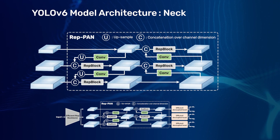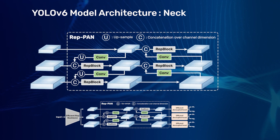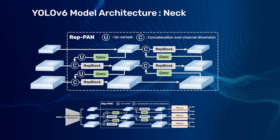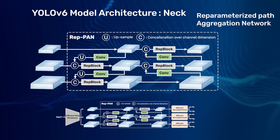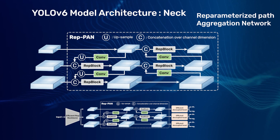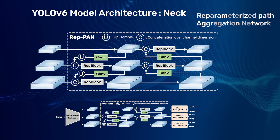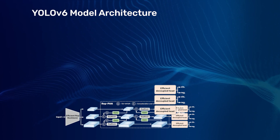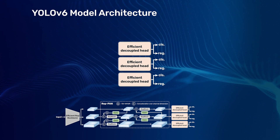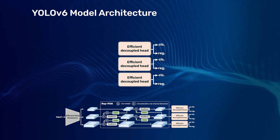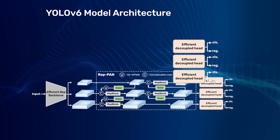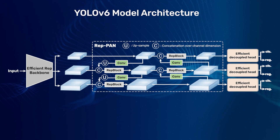The REP blocks are also introduced to the neck. Due to this, the neck is called the Reparameterized Path Aggregation Network, or REP-PAN. Further, it uses decoupled heads for classification and regression. Combining all these, we get the entire YOLO v6 architecture.